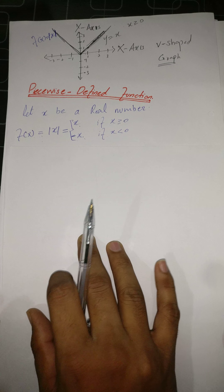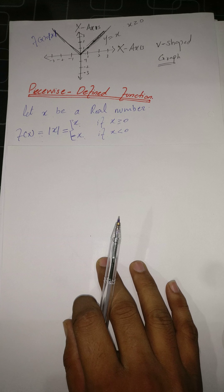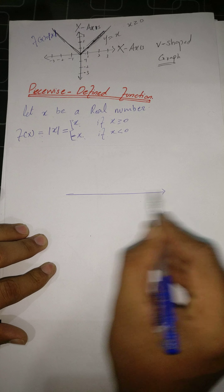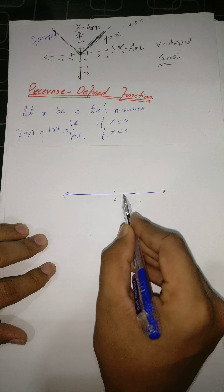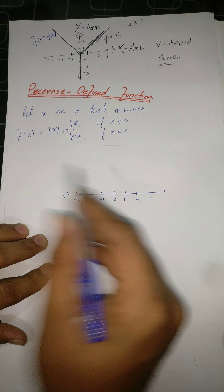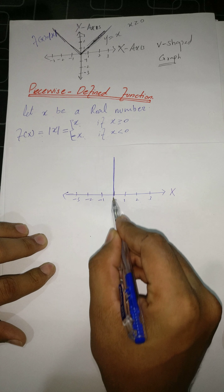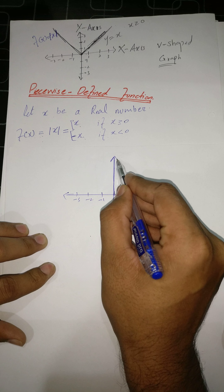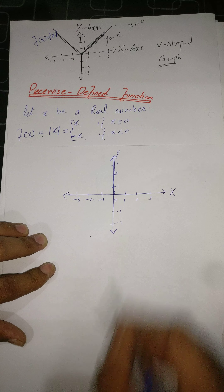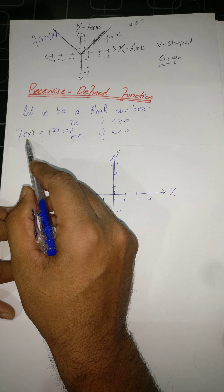We know that x belongs to the real numbers. When we draw a real line, it goes from 0, then 1, 2, and so on to positive infinity on the right, and −1, −2, −3, and so on to negative infinity on the left.